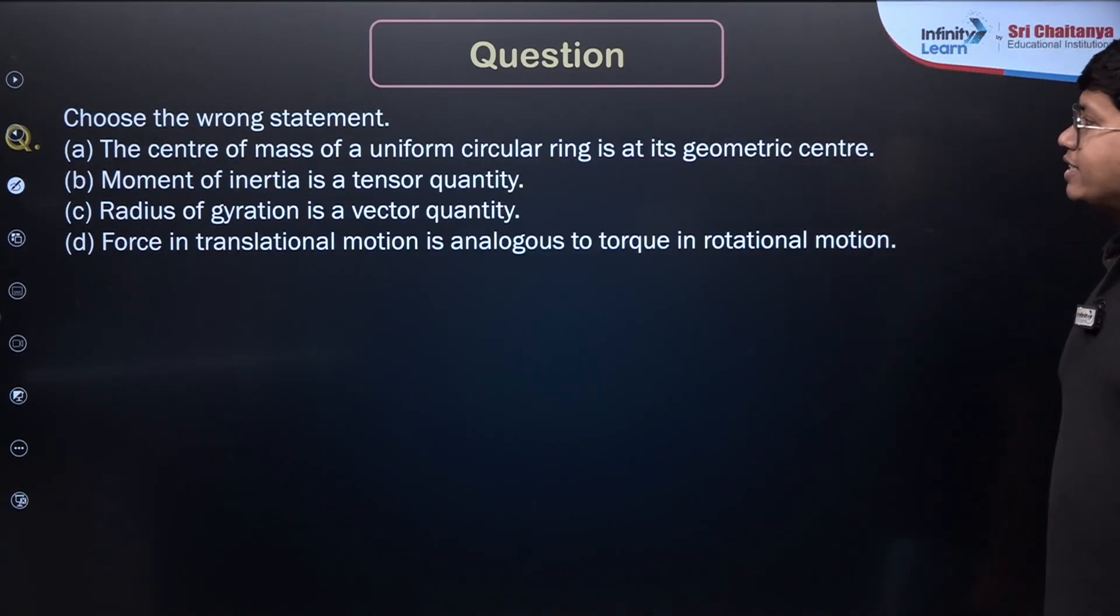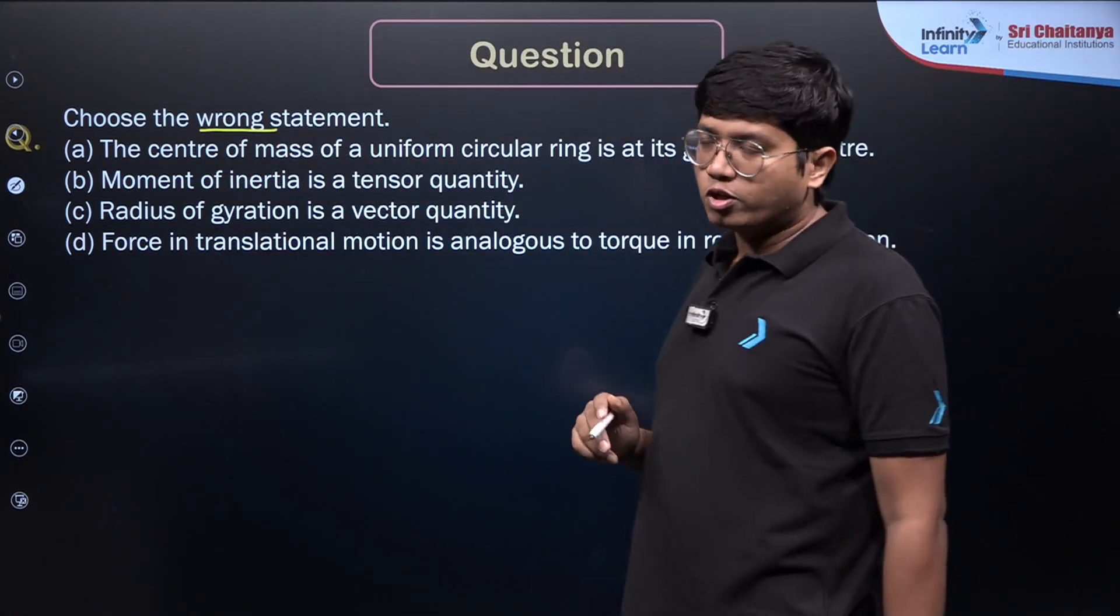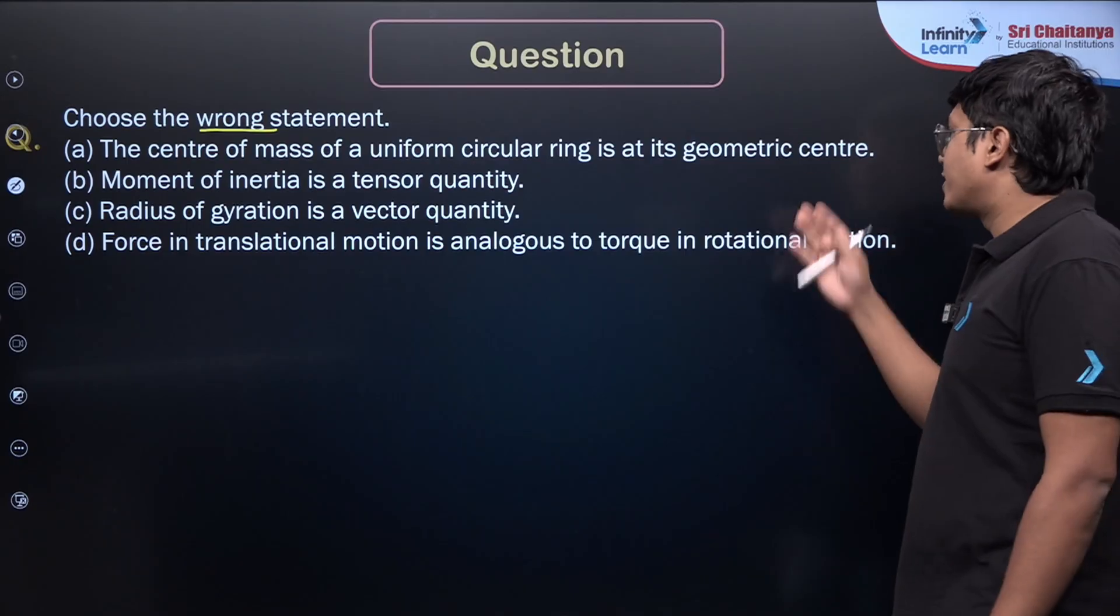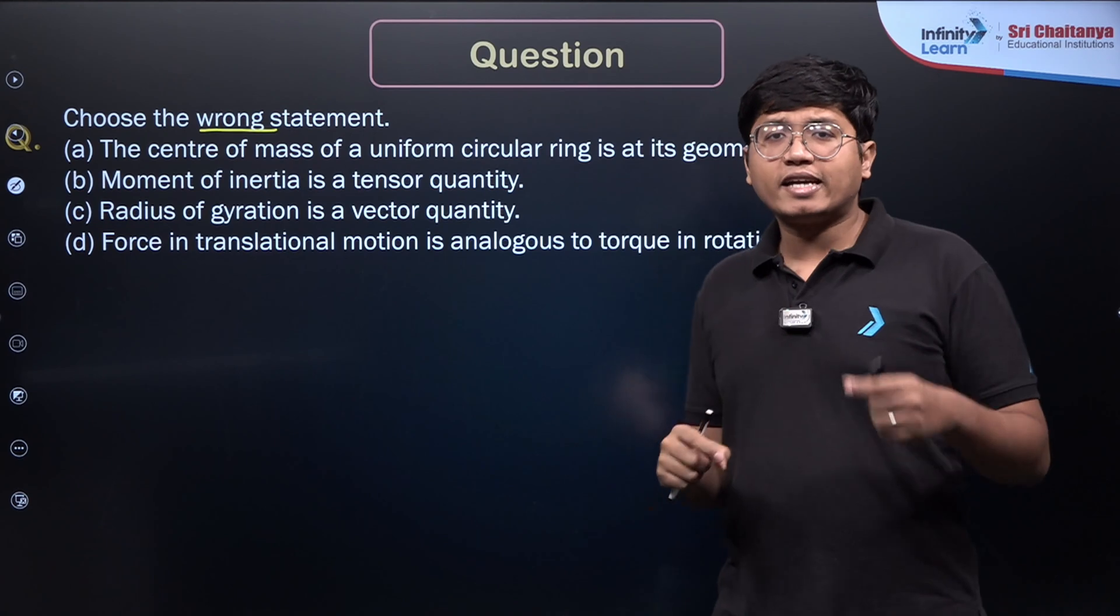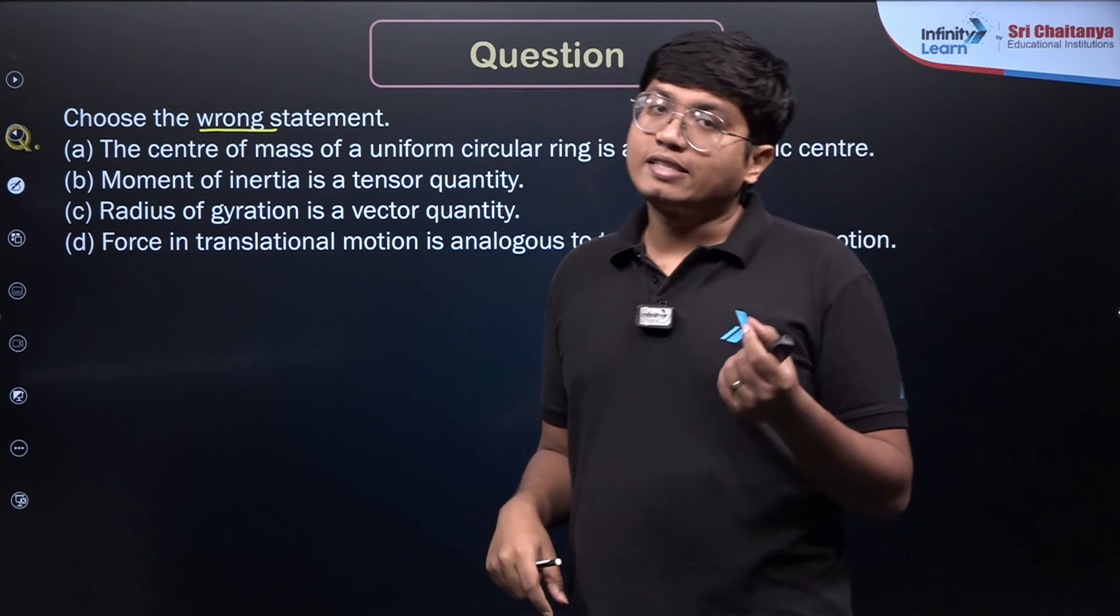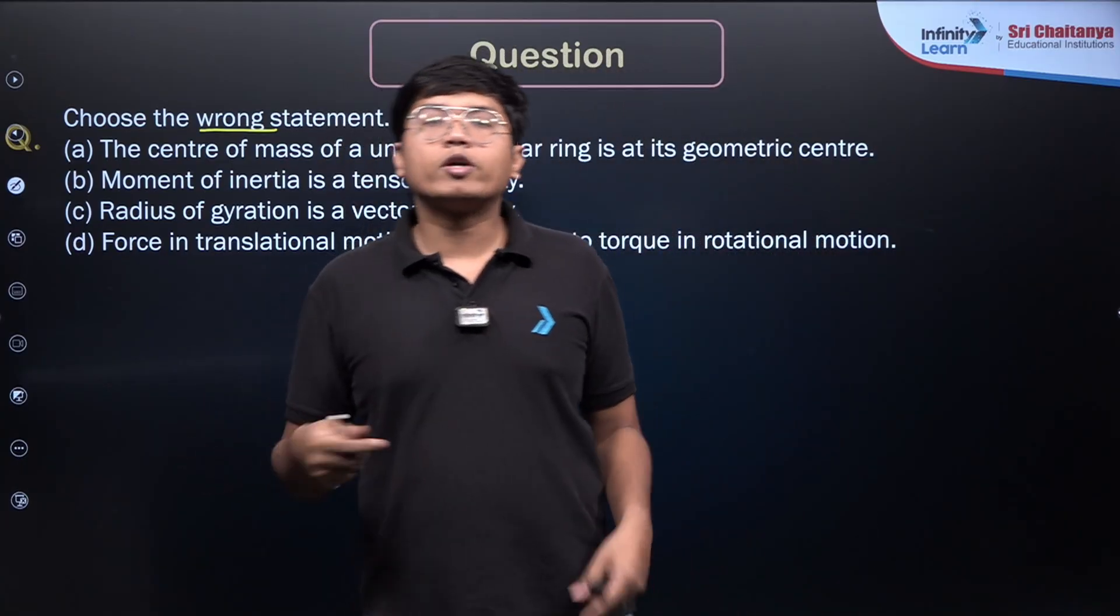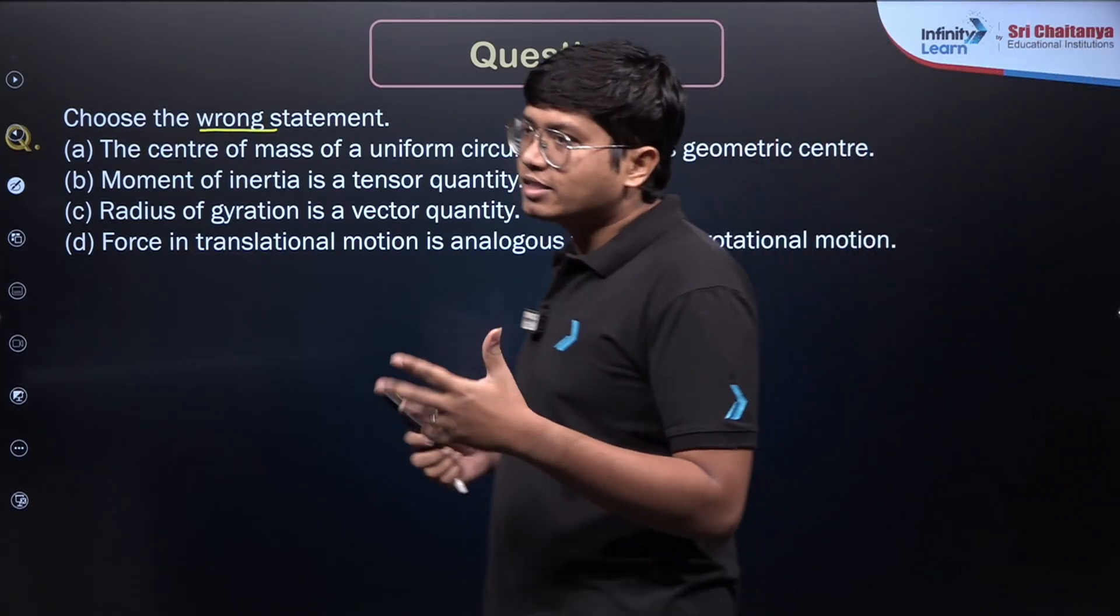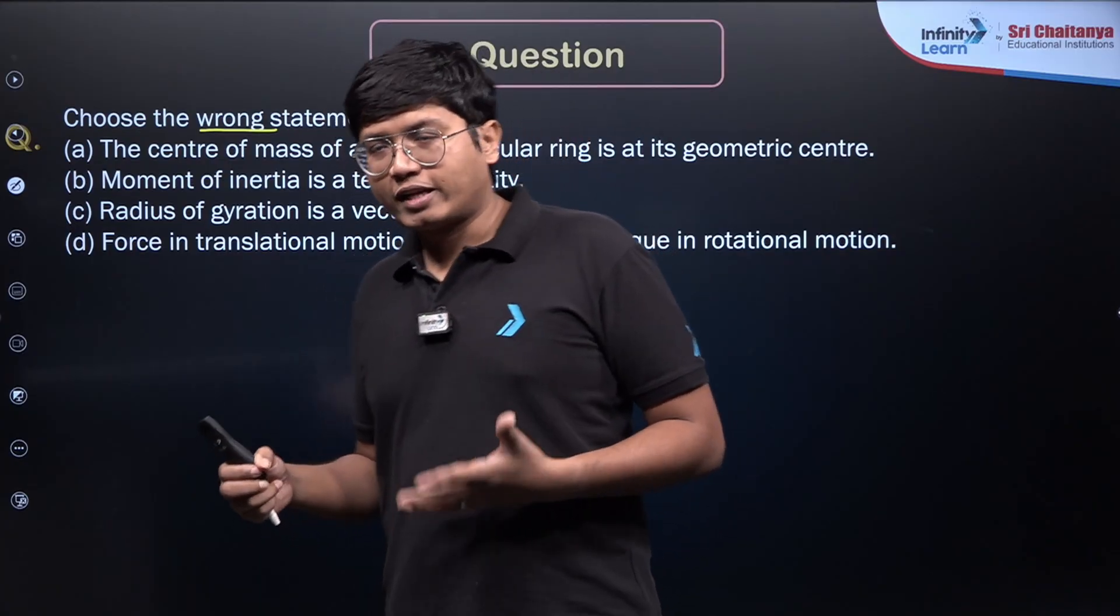Let's try the next one. It says choose the wrong statement among them. Please be careful, we have to choose the wrong statement, not the right one. Let's look at the first one. The center of mass of a uniform circular ring is at its geometric center, which is a correct statement. Yes, we know if it's a ring, the center of mass is at the center. Even though there is no mass there, still the center of mass exists at that point. Next, moment of inertia is a tensor quantity. Yes. Now even though we most of the time deal with it as a scalar quantity, it's essentially a tensor quantity, tensor quantity of rank 2.